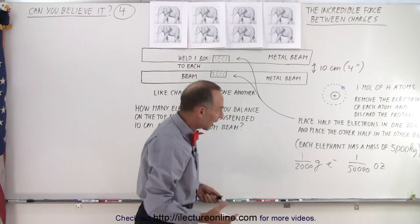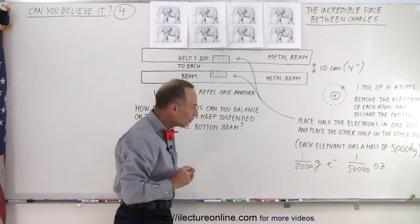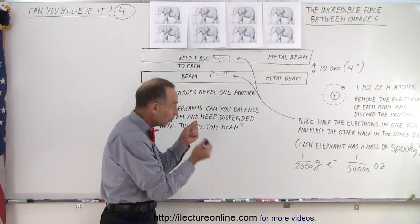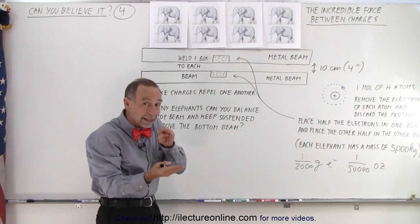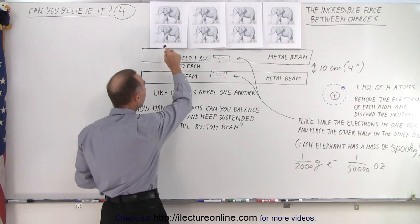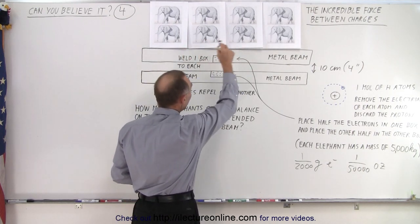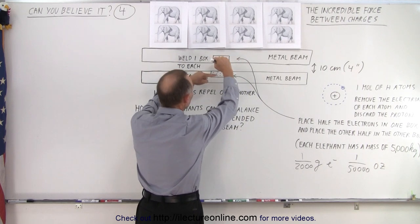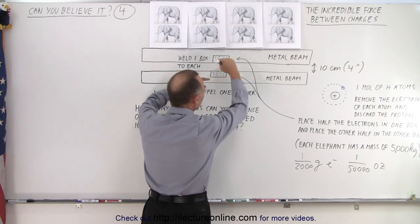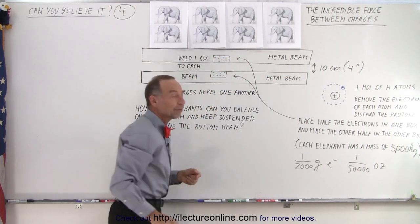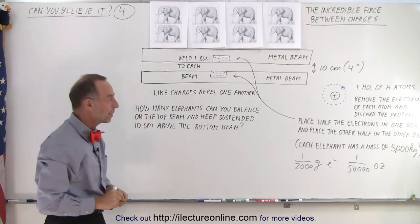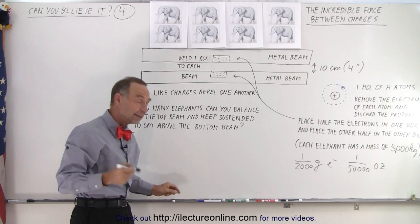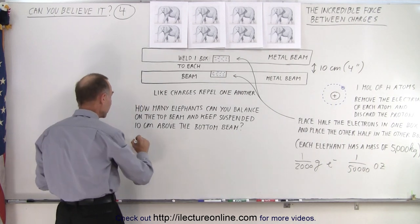So one fifty-thousandth of an ounce, or one two-thousandth of a gram of electrons split into two groups, half put in the top box, the other in the bottom box. Now they repel each other, and the question is, how many elephants can you put on the top beam so that the two beams would be levitated, the top beam levitated at a height of ten centimeters, or four inches above the bottom beam?